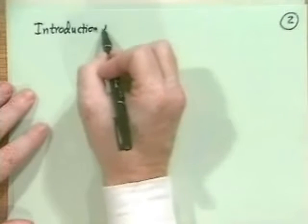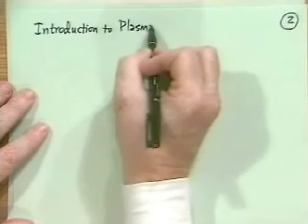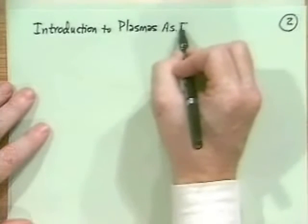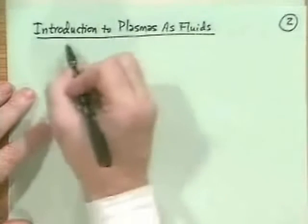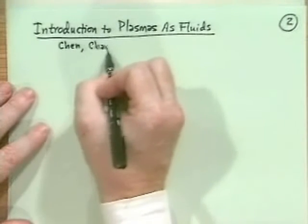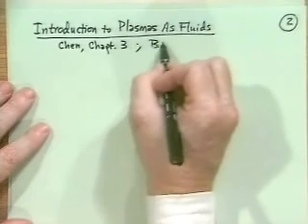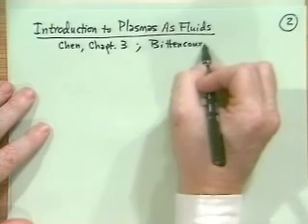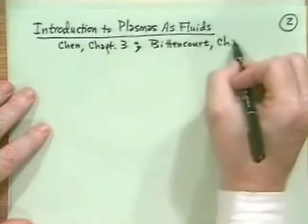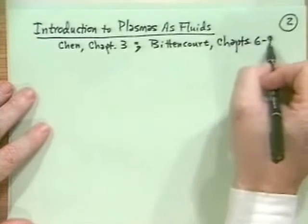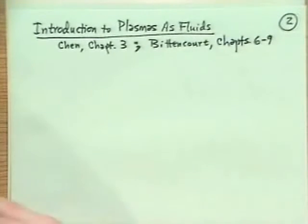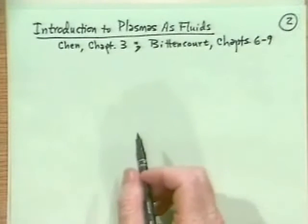The next subject is Chen Chapter 3, or Bittencourt Chapters 6 through 9 — Bittencourt is for general background. We're going to discuss an introduction to plasmas as fluids. We've skipped Bittencourt Chapter 5, which is kinetic theory — we'll come back to kinetic theory later.